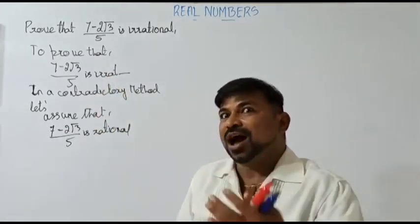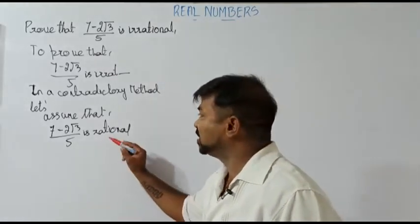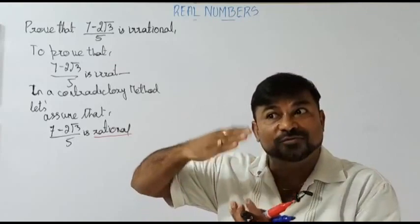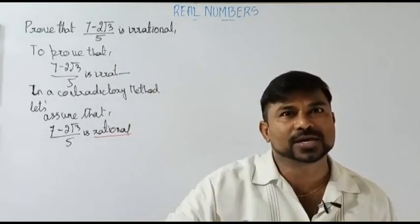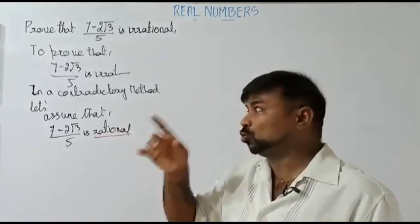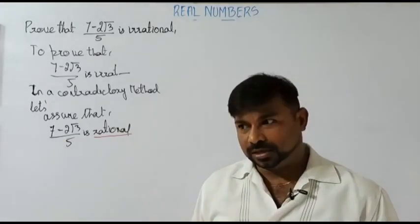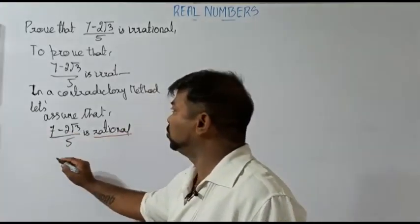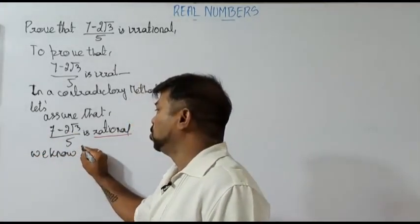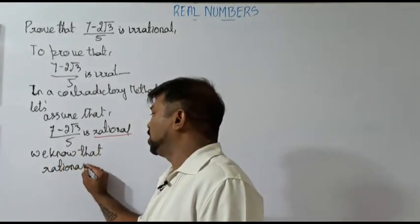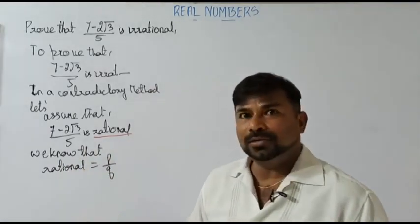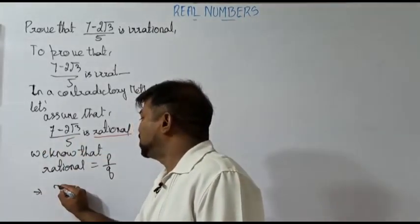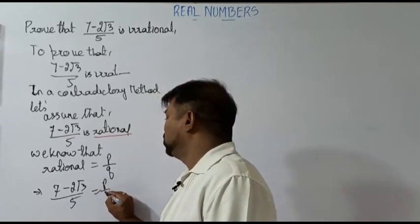We are supposed to prove irrational, but we are assuming it is rational. The main point we got is rational. Now let's think about the rules of a rational number. A rational number is a number which can be written in the form P/Q. So let's follow all the rules. Therefore, let us take (7 - 2√3) / 5 = P/Q.